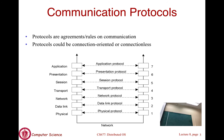A typical protocol stack, called the ISO protocol stack, has seven layers: physical, data link, network, transport, session, presentation, and application. The application sits at the top. Two processes on two different machines that wish to communicate will use this network protocol stack to enable that communication.